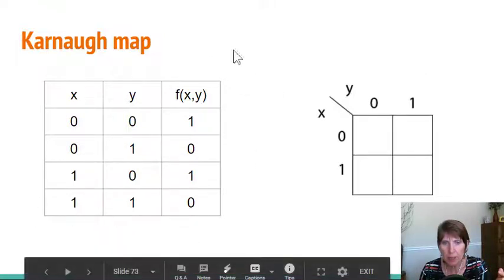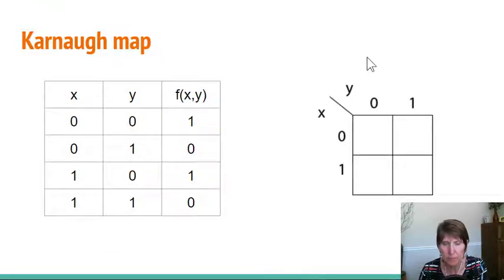Here is an input-output table with two variables. Notice it has four rows. Here's a Karnaugh map. Here's an input-output table with two variables. Notice that it has four rows for each of the combinations. Here's a Karnaugh map that has two variables, X and Y, and it has four boxes.